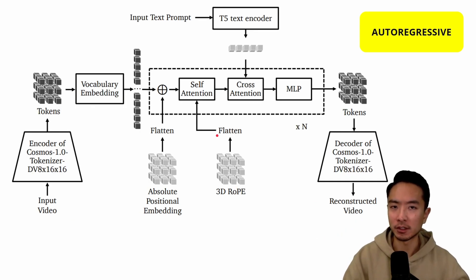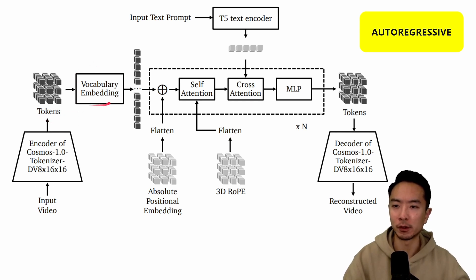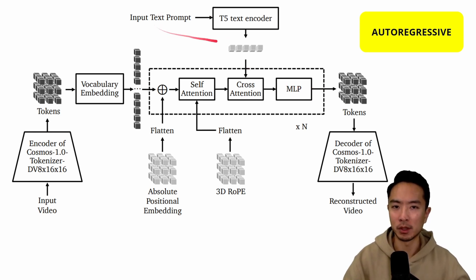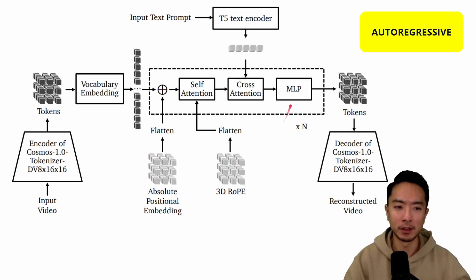Here's the architecture of the Autoregressive model. It's very similar to the Diffusion model with a few differences. There's no longer a Gaussian noise block — instead, we use a vocabulary embedding, similar to how LLMs like ChatGPT work. The center portion with self-attention, cross-attention, and MLP stays the same. There's also a text encoder for the input text prompt. The absolute positional embedding and 3D RoPE at the bottom are also the same. Finally, everything gets passed out to tokens and goes into the decoder to get the reconstructed video.